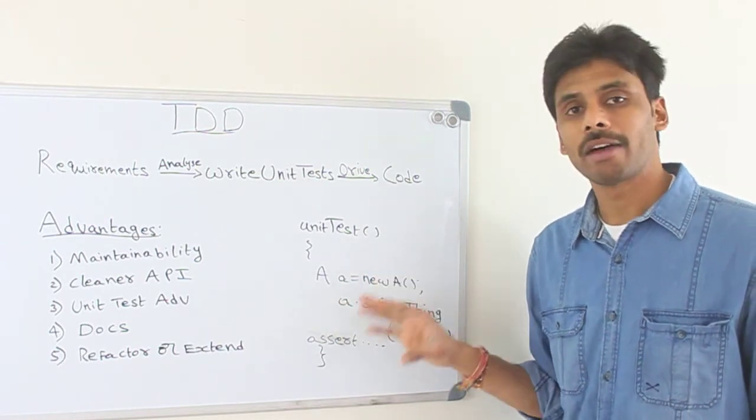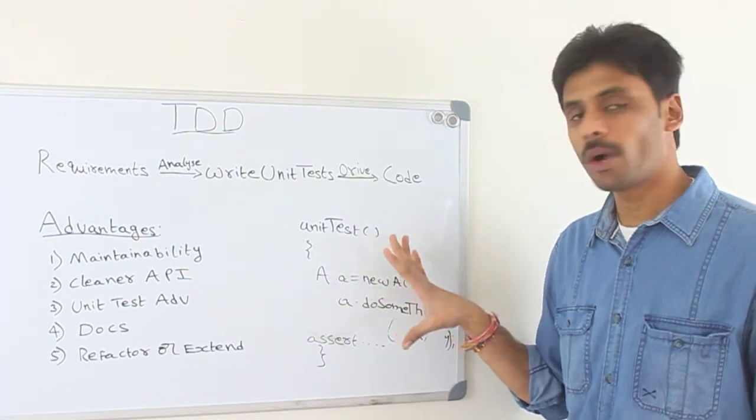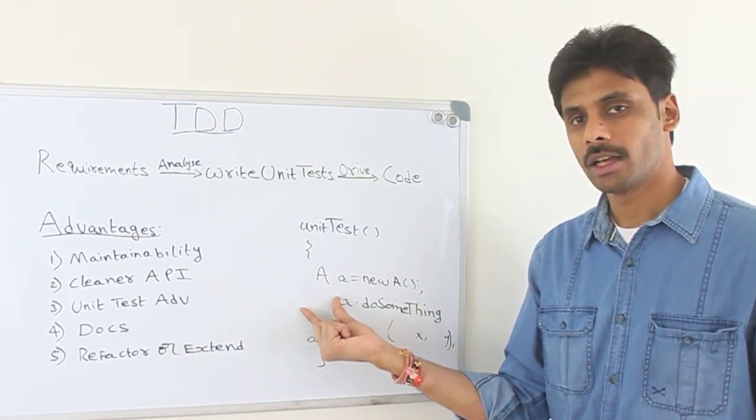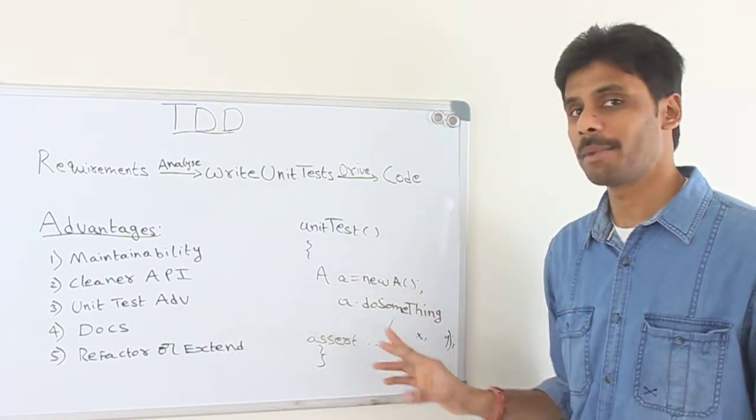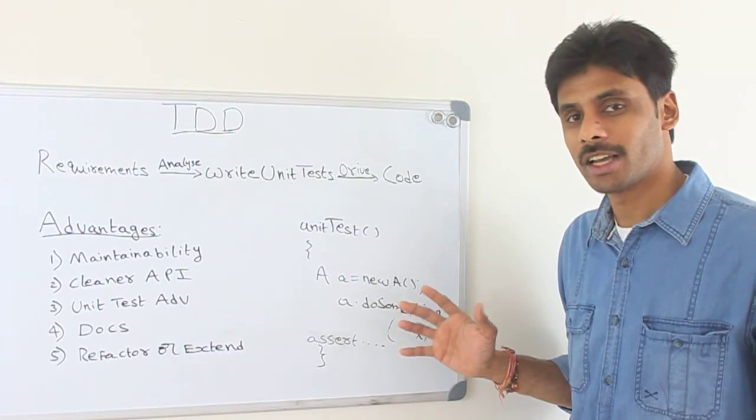So here, I want to have a class that does something, a class called A. So at this point, when I am writing my unit tests in my application, I don't even have this class. Simply, I'll come and start typing A equals new A, as if that class exists.